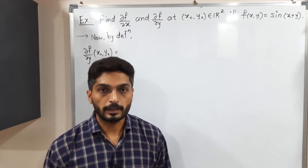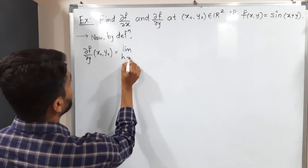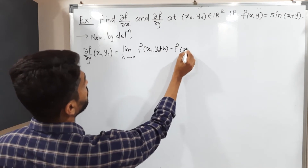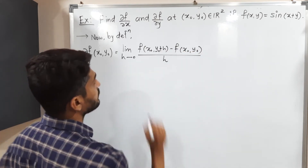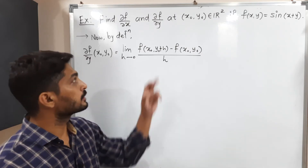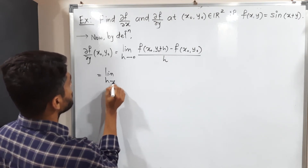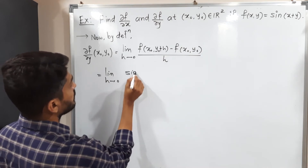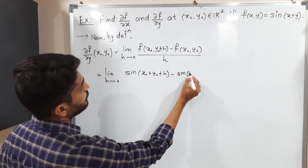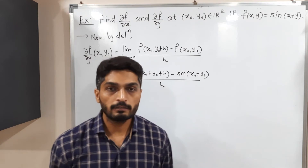Now let us find ∂f/∂y at point (x₀, y₀). By definition, this is limit h→0 of [f(x₀, y₀ + h) − f(x₀, y₀)] / h. Since we are finding the derivative with respect to Y, that is the second component, we add h in the second component. Using the definition of f: limit h→0 of [sin(x₀ + y₀ + h) − sin(x₀ + y₀)] / h.